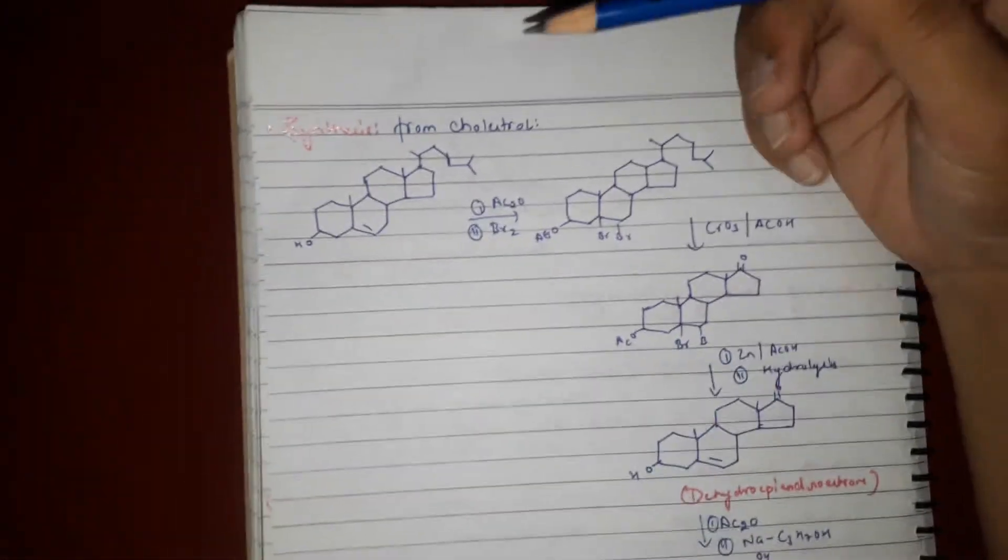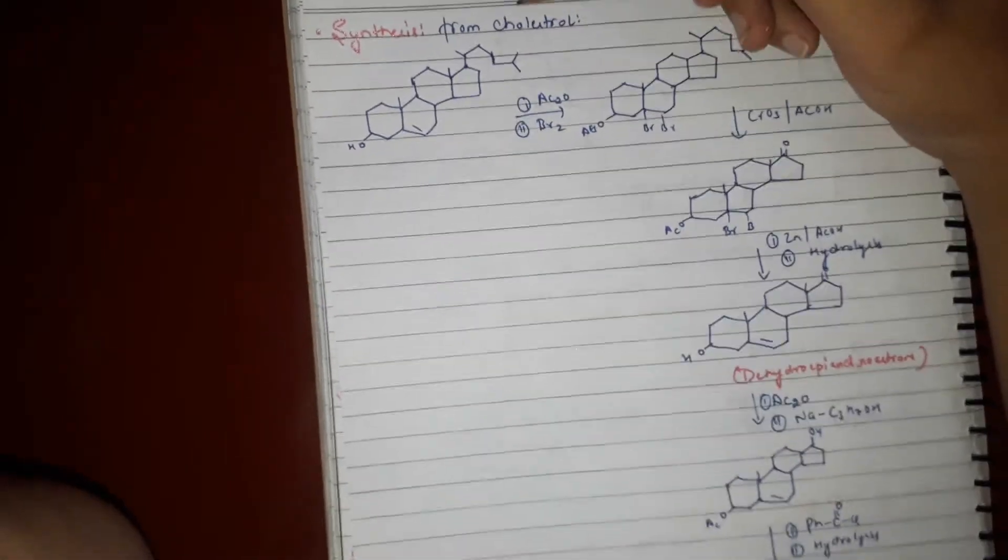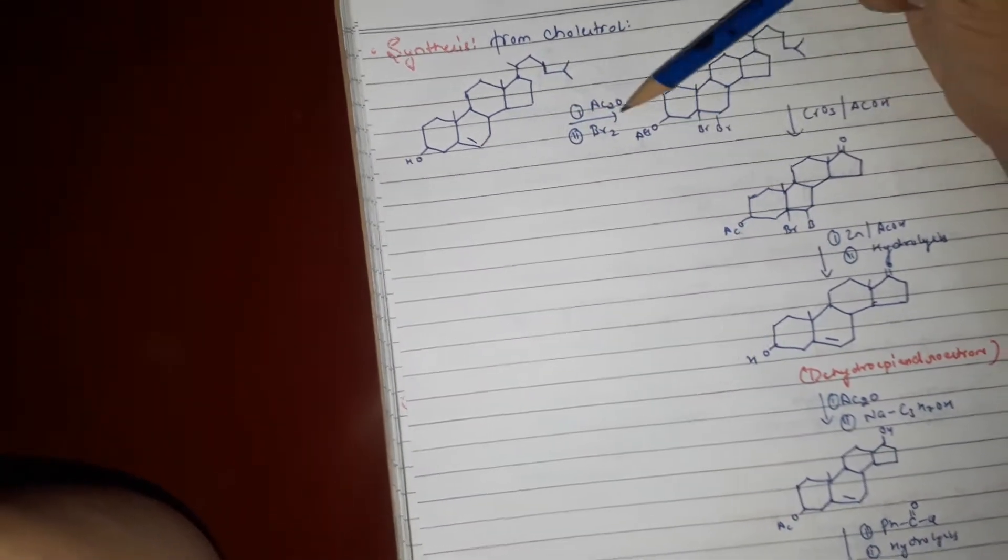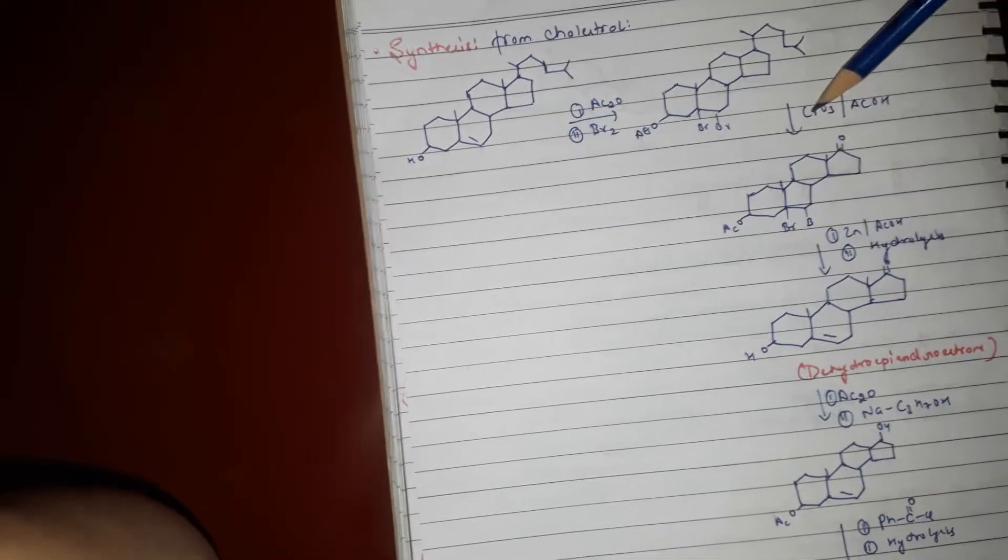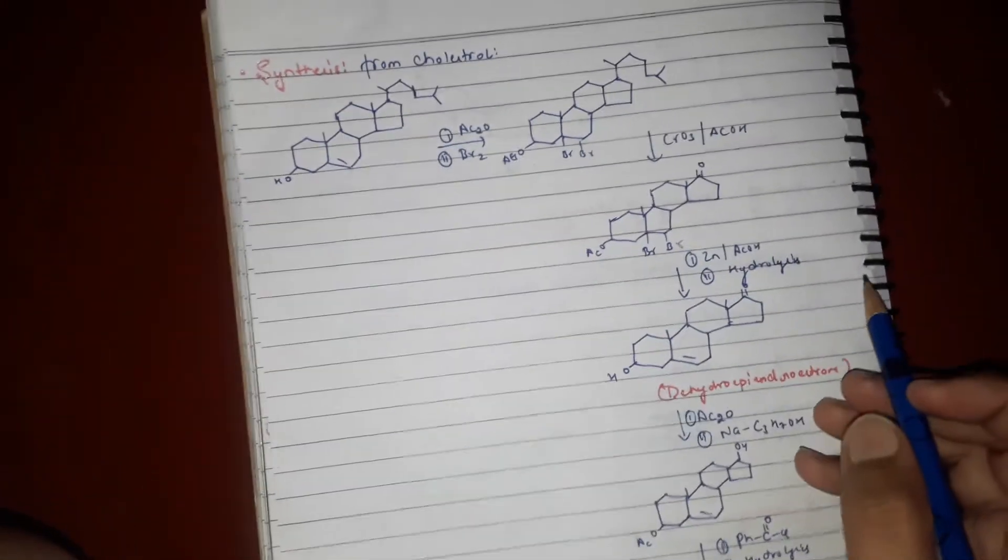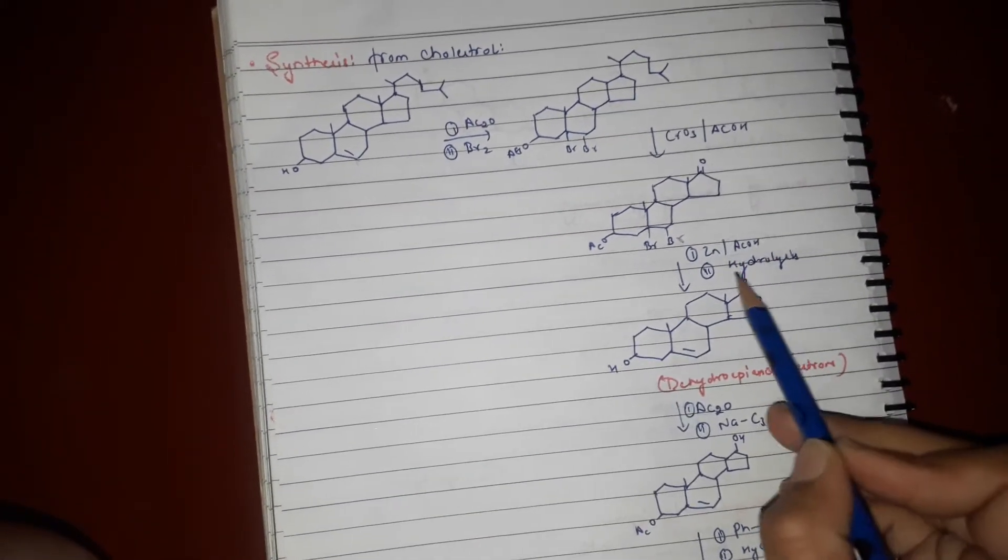Synthesis from cholesterol: It is also synthesized from cholesterol. Cholesterol structure undergoes acetylation with Br2, forming OAc group. At that point, the double bond is treated with chromium trioxide in acetic acid to form carbonyl group, then with zinc in acetic acid and hydrolysis.